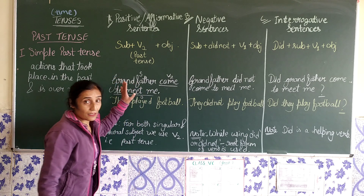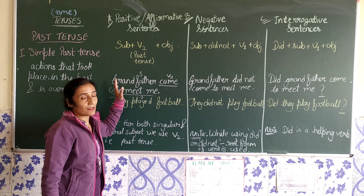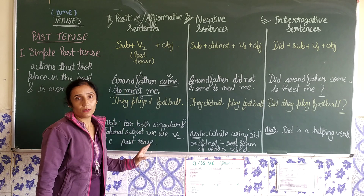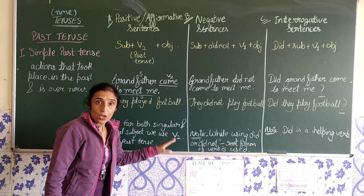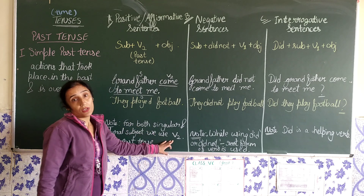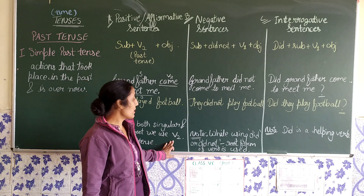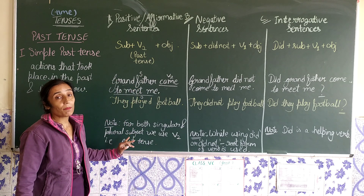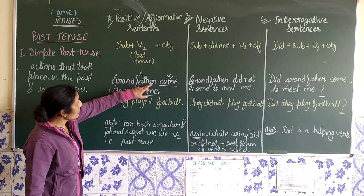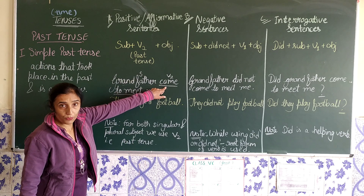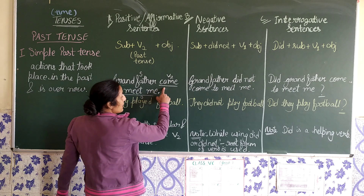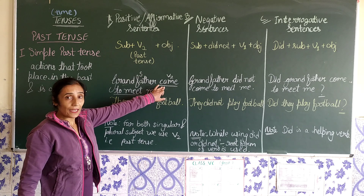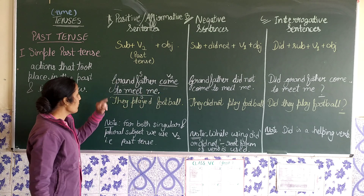The subject is singular but the verb is the second form of the verb. In simple past tense, whether the subject is singular or plural, we will use the verb's second form. 'Come' is the root form of the verb, but here we have 'came' — that is the second form of the verb.